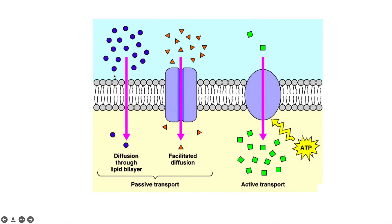In diffusion, substances are lipophilic and easily diffuse through the lipid cell membrane without any carrier protein or energy. In facilitated diffusion, a carrier protein is required but no energy is needed, and the compound moves from higher to lower concentration. In active transport, a carrier protein is also needed, but substances move from low to high concentration, requiring energy in the form of ATP. This was part one of transportation mechanisms; in the next class, we will study the plant water system. Thank you for watching.